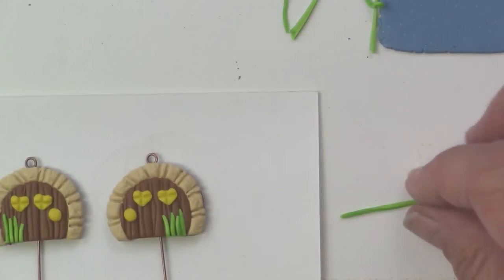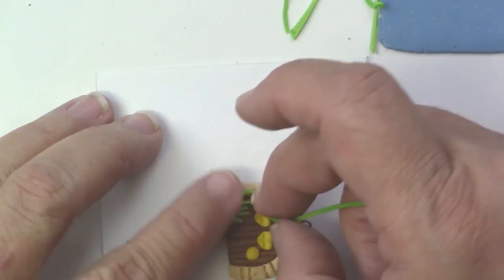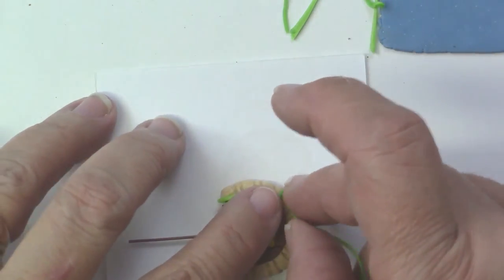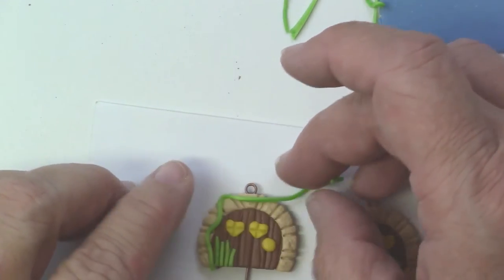I'm going to take another strand of the green and start to form a vine around the stone that's around the door. I'm just curving that snake around to simulate a vine that would hang over a door.